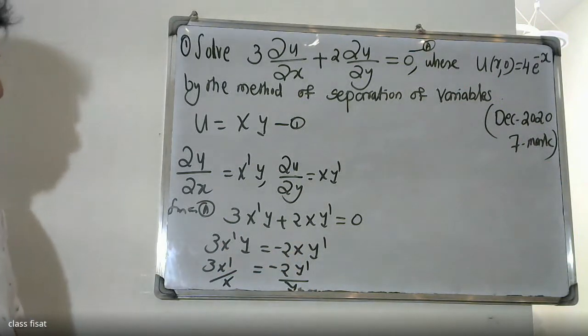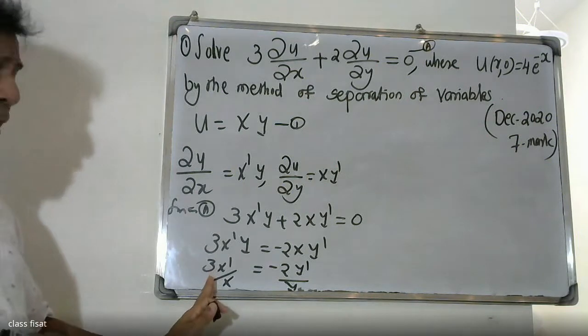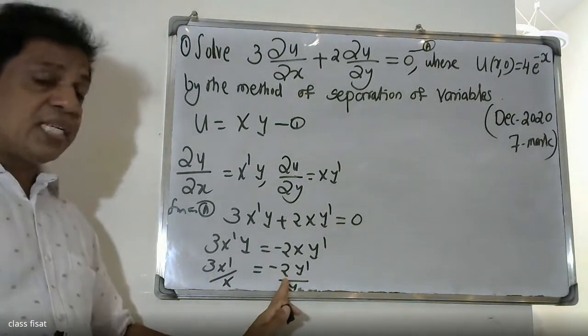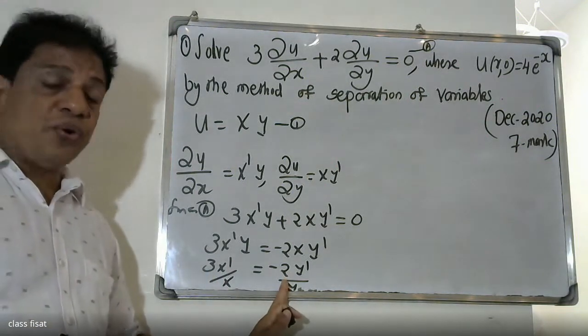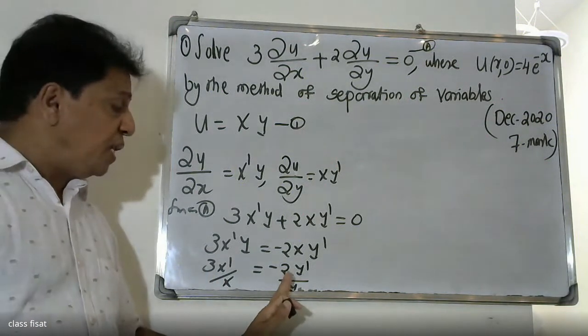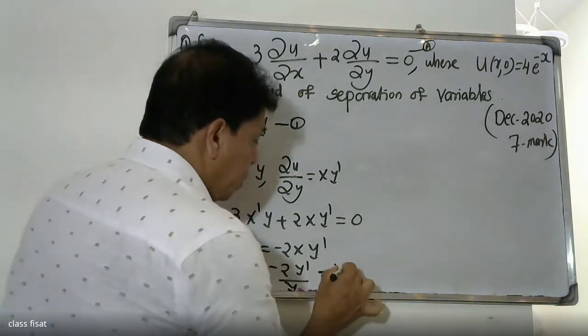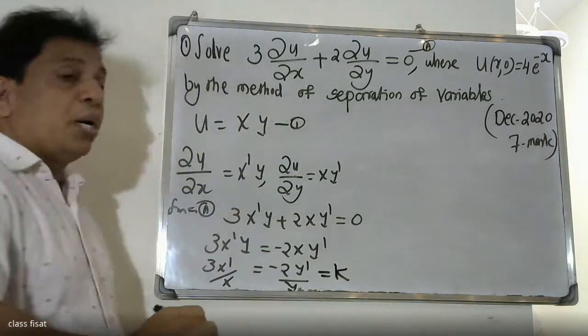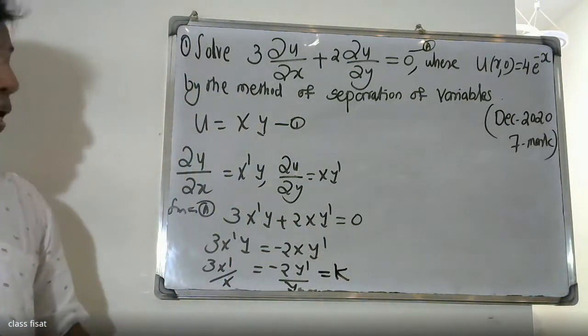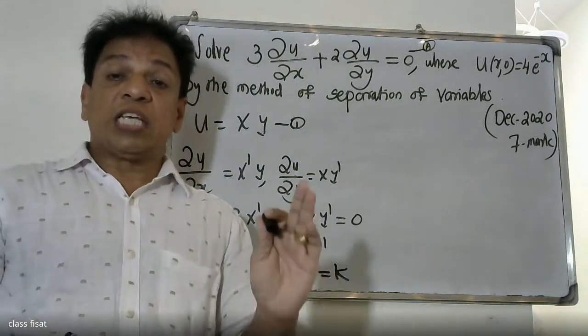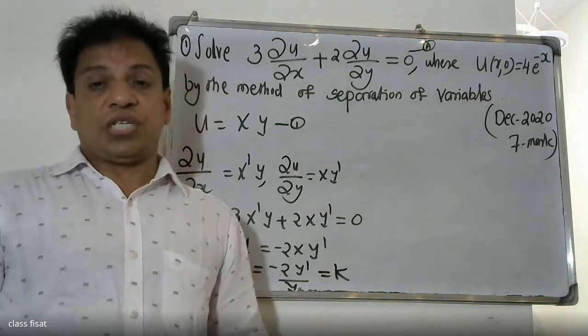The left-hand side is a function of x only, and the right-hand side is a function of y only. Therefore, we can set each side equal to a constant — this constant is called the separation constant k.